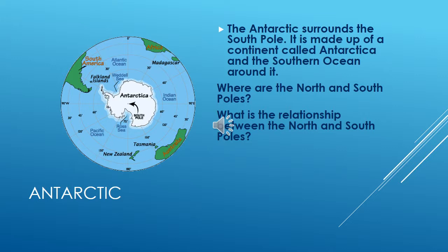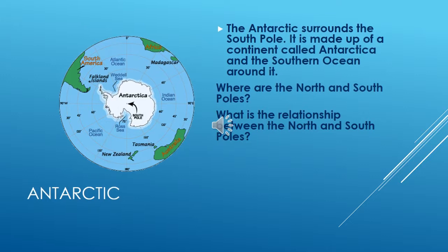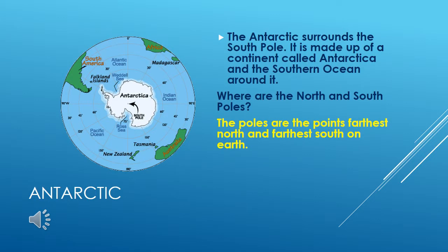Where are the North and South Poles? What is the relationship between the North and the South Poles? Poles are the points farthest north and farthest south on Earth. Take a minute and discuss with your shoulder partner the relationships between the North and the South Poles now.